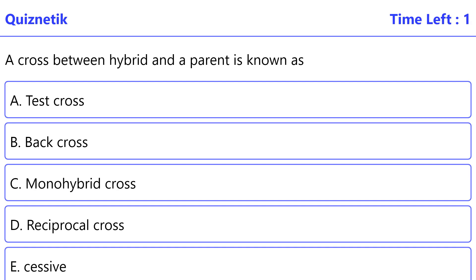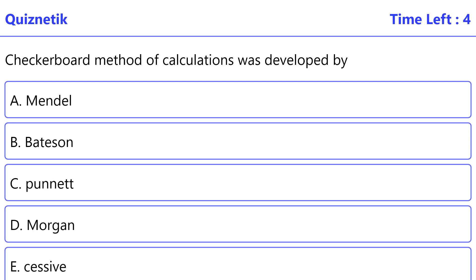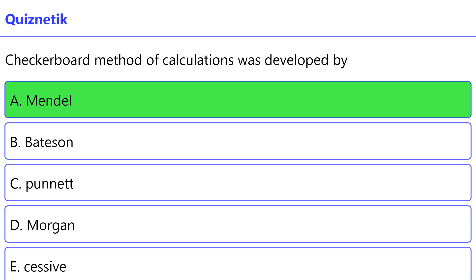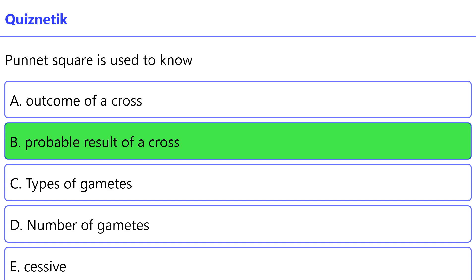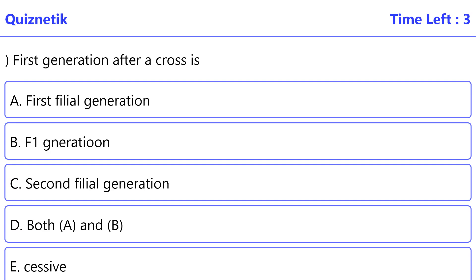A cross between a hybrid and a parent is known as — the correct option is B: Back cross. The checkerboard method of calculation was developed by — the correct option is A: Mendel. The Punnett square is used to know — the correct option is B: the probable result of a cross.